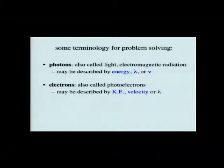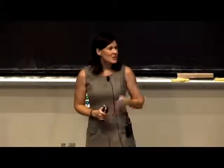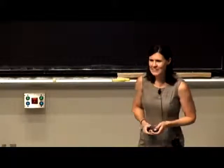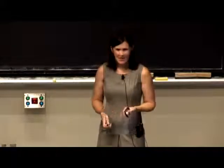Whether we talk about electrons or photoelectrons, we can describe them in terms of energy or velocity — and from velocity you can figure out the energy using one-half mv squared. We can also describe the electron in terms of wavelength. You don't know this yet from this class, but by the end you'll learn that electrons can, in fact, have a wavelength. Once we cover that, it will be fair game to ask photoelectric effect or photoelectron spectroscopy questions using the wavelength of the electron.